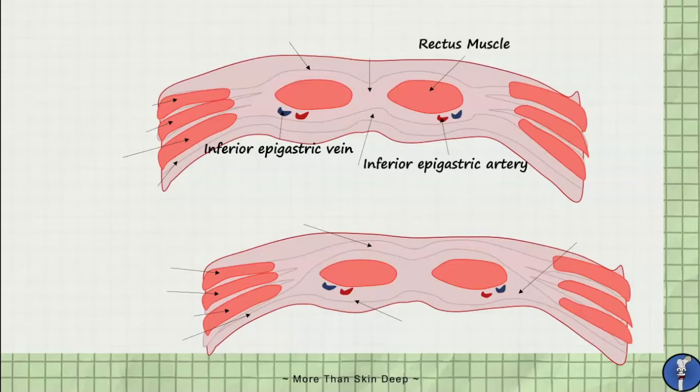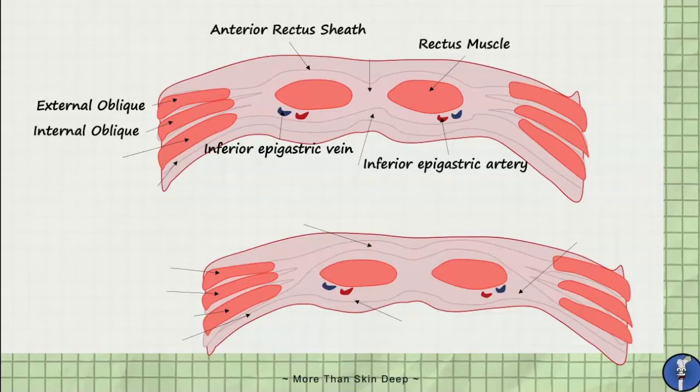Above the arcuate line, the aponeurosis of the external oblique and part of the internal oblique continue as the anterior rectus sheath. The posterior rectus sheath is comprised of the transversus abdominis aponeurosis and the transversalis fascia layer.